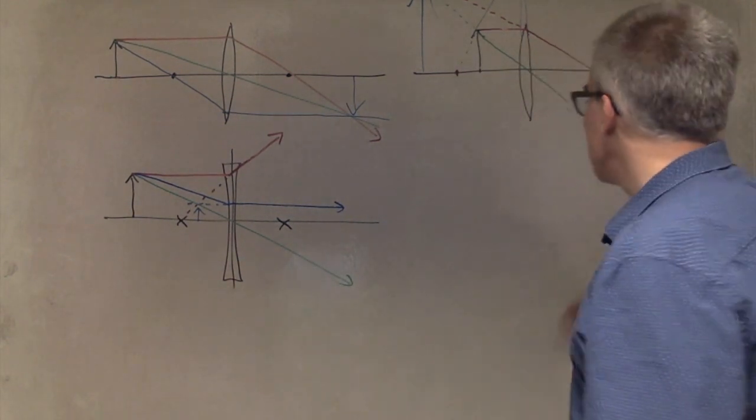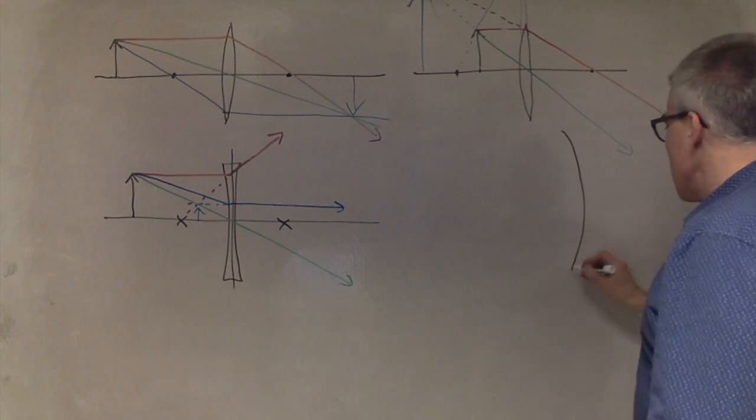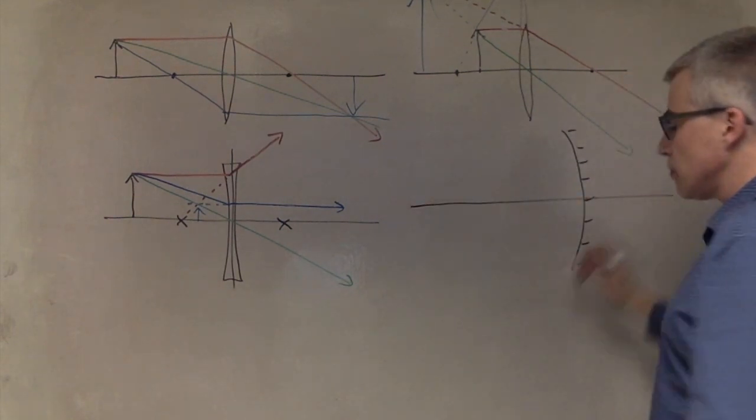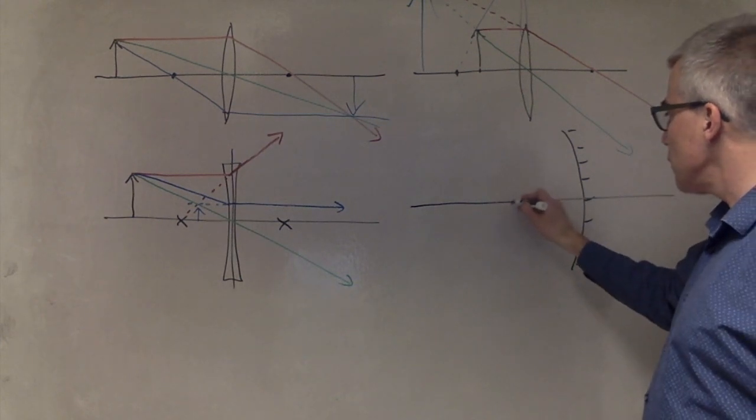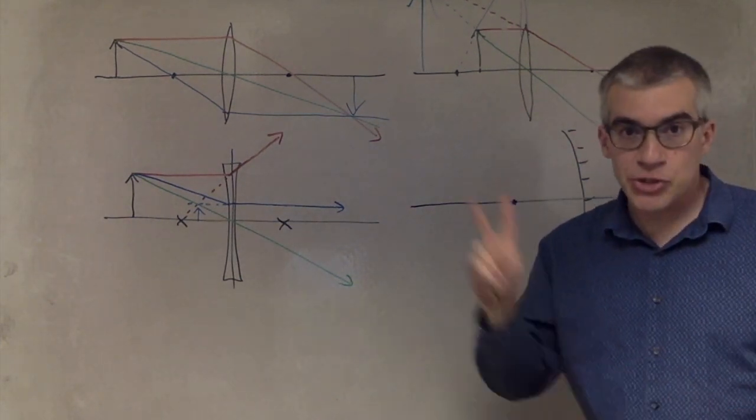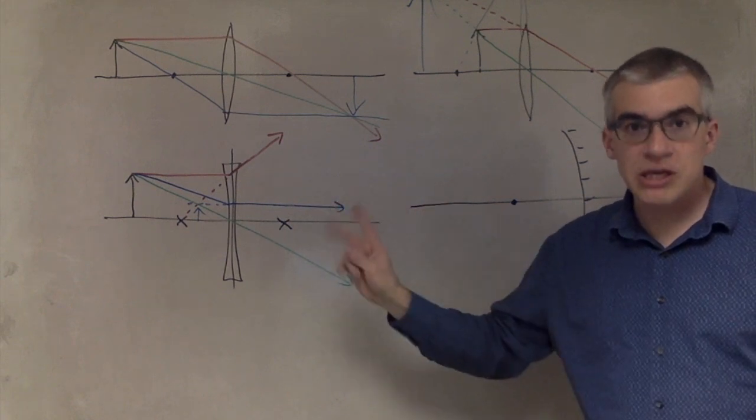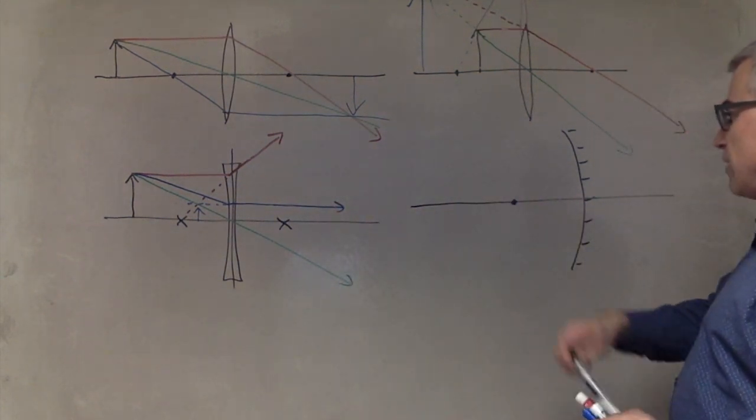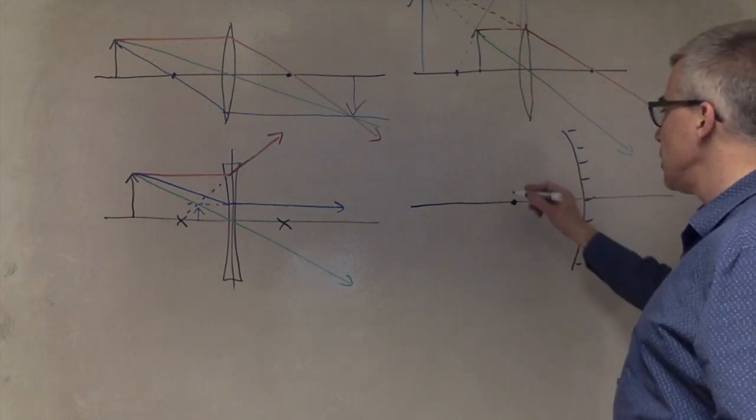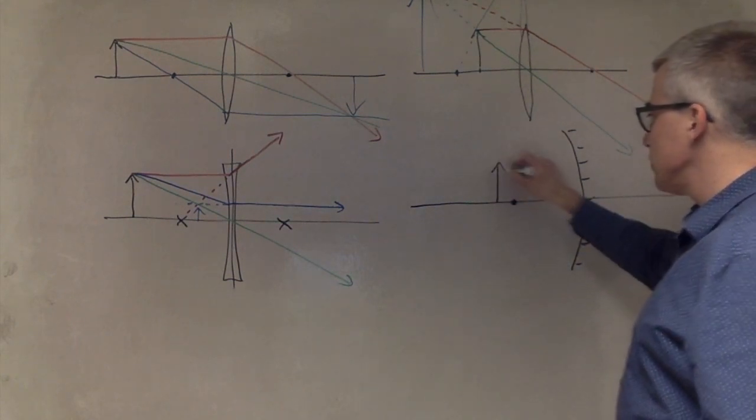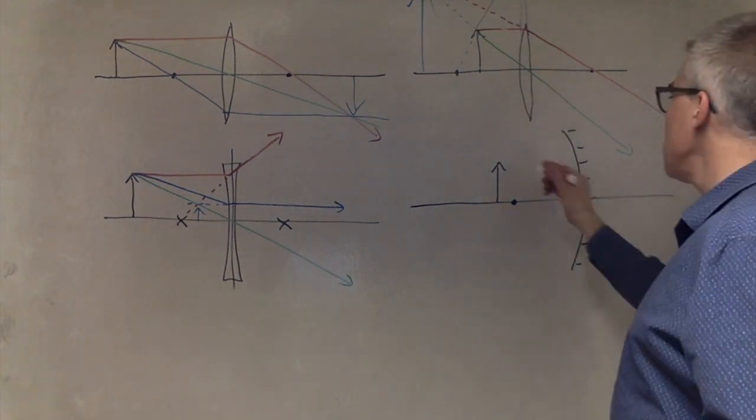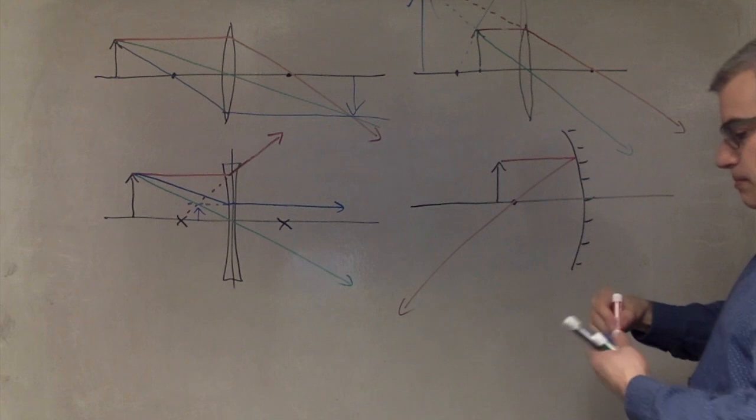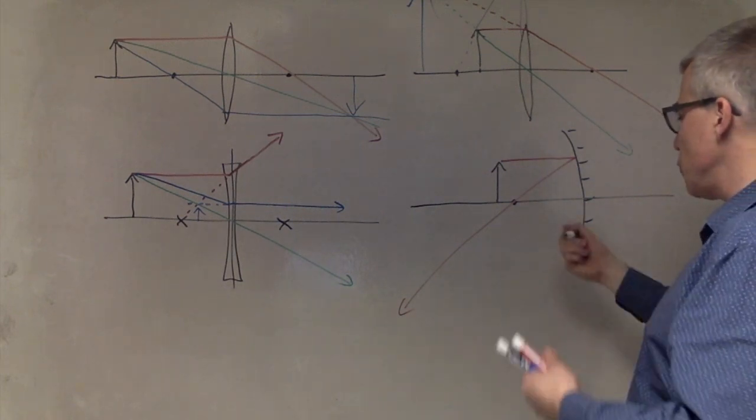What about mirrors? Concave mirror, if here's the focal point, there's only one focal point for a mirror. There are two for lenses, equally spaced, but there's only one for mirrors. So, let's say we have an object just past the focal point. Parallel beam goes through there, parallel to the focal point.